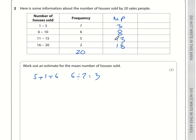We know that 7 people sold an estimated 3 houses. The total number of houses sold by these 7 people is 7 times 3, which is 21. We're multiplying these columns: 6 times 8 is 48, 5 times 13 is 65, 2 times 18 is 36. We need to add these figures together: 21 plus 48 plus 65 plus 36. That comes to an estimated total of 170 houses.